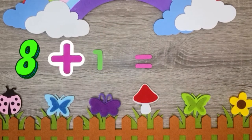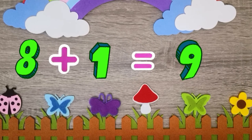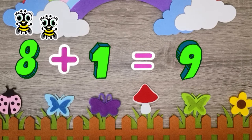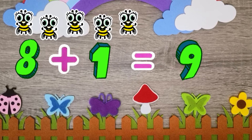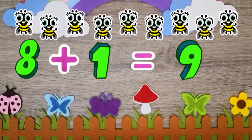8 plus 1 equals 9. 1, 2, 3, 4, 5, 6, 7, 8, 9.